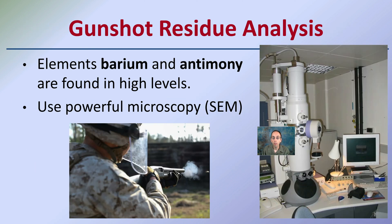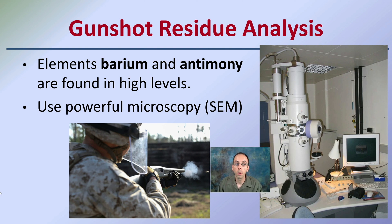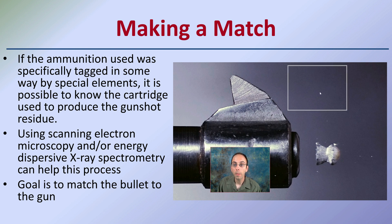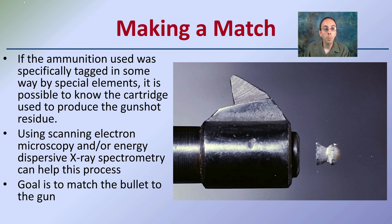When gunshot residue is brought into a lab and analyzed, we look for elements such as barium and antimony, which are typically found at high levels. A scanning electron microscope can help identify that residue, and there are also chemical tests to determine what elements are present. If the ammunition was specifically tagged in some way with special elements, it's possible to identify the cartridge used to produce the gunshot residue.